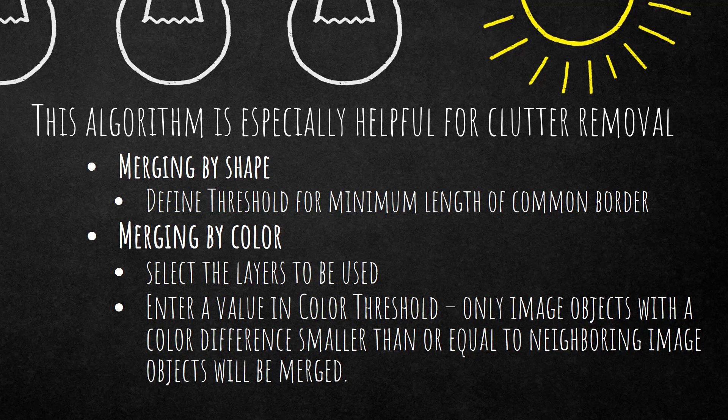You can also define a threshold for the minimum length of a common border — for example, only merge with a neighbor if the common border is at least 70%. The second setting is merging by color. You can select the layers to be used and define a color threshold, so only image objects with a color difference smaller than or equal to that of neighboring image objects will be merged. So it merges into spectrally similar image objects, not based on border length.